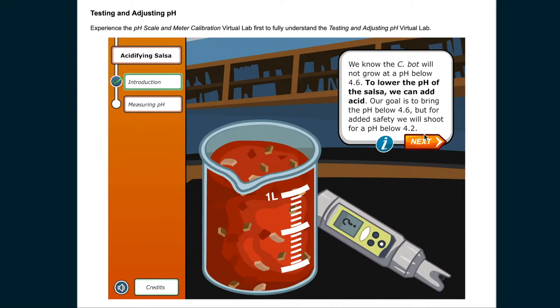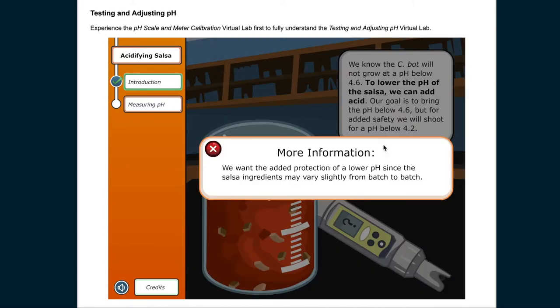We know that CBOT will not grow at a pH below 4.6. To lower the pH of the salsa, we can add acid. Our goal is to bring the pH below 4.6, but for safety, we will shoot for a pH below 4.2. We want the added protection of a lower pH since the salsa ingredients may vary slightly from batch to batch.